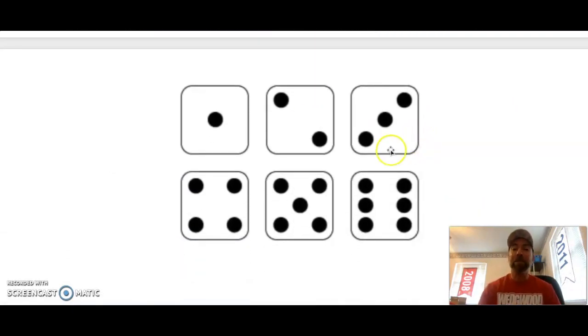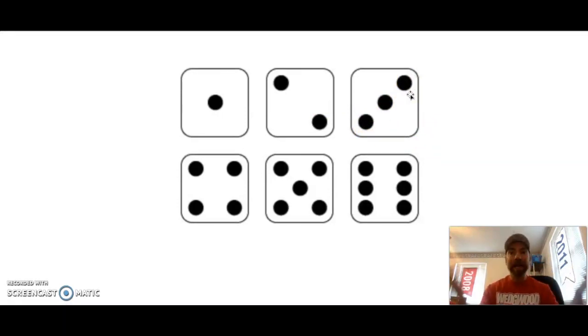And then the number three. One, two, three dots. But when I look at it, I automatically know it's three. Four dots. Five dots. Six dots.